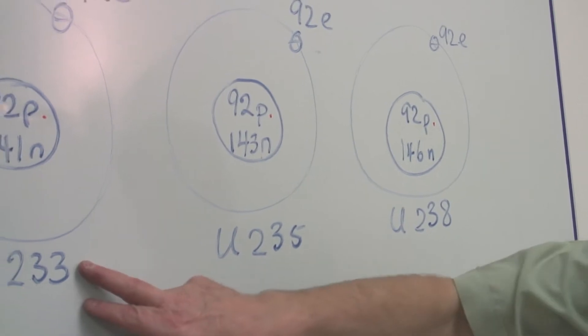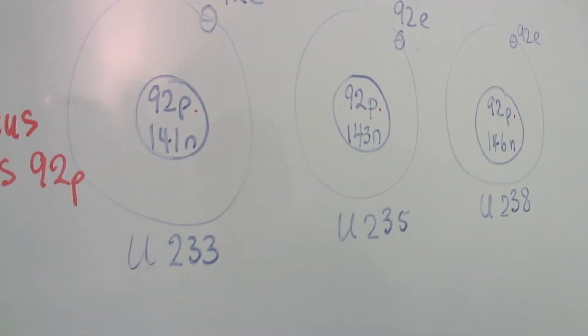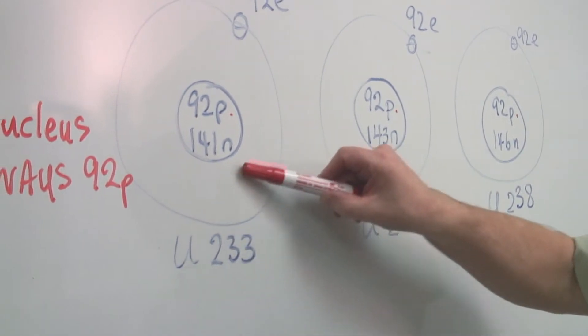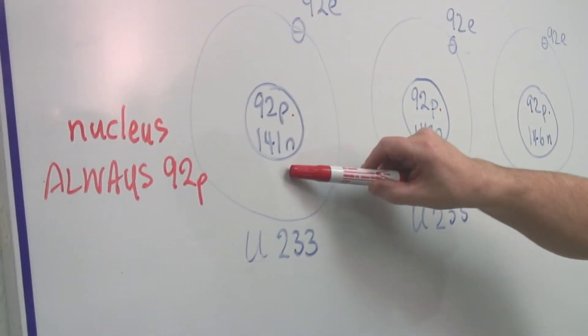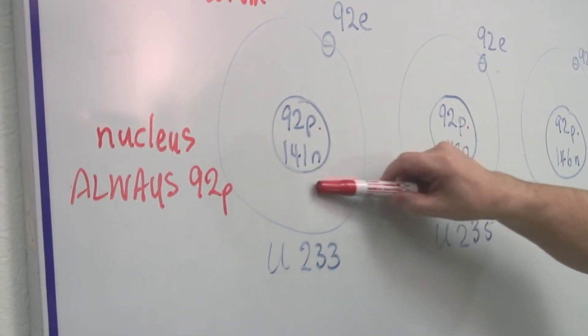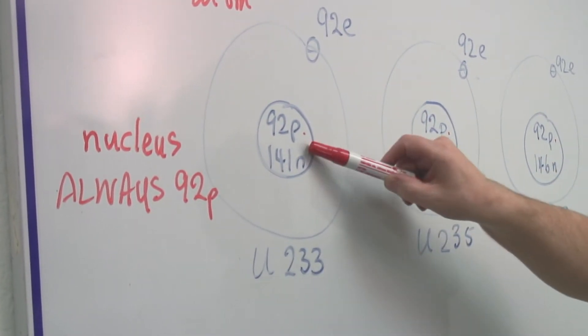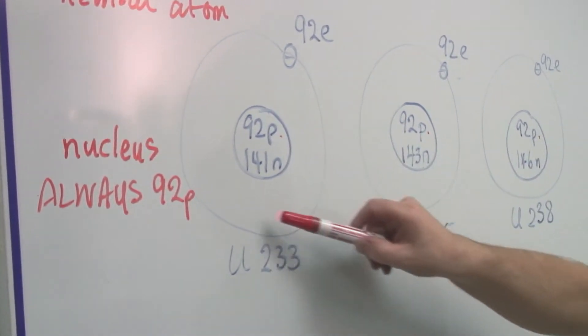This one is called uranium two three three. And obviously if you look at these numbers, they add up to two hundred and thirty-three. That is two hundred and thirty-three particles, protons and neutrons, in the nucleus.